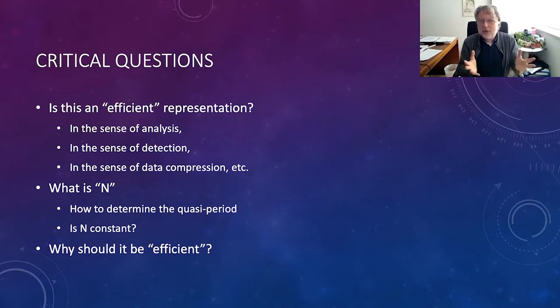The critical question is, why are we doing this? Is it efficient in the sense of analysis? Are we making sense of something? Are we able to detect something out of the two-dimensional representation which we cannot see in the one-dimensional case? Is it better in data compression? And how can we really determine this period? What happens if that period is changing sometimes if it's not constant?